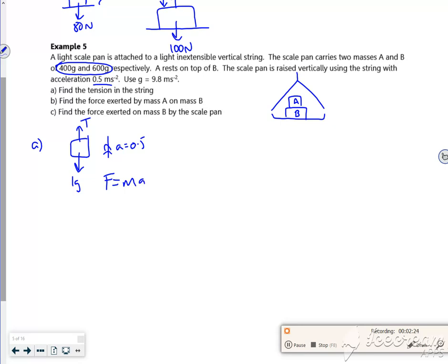So I'm looking at the whole system, so if I do F equals MA, I've got T minus G is 1 lot of 0.5, so I've got T is roughly, well they put 10.3, so T is 10 newtons to 2 sig fig.